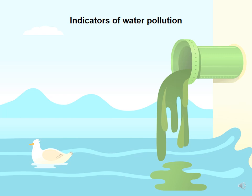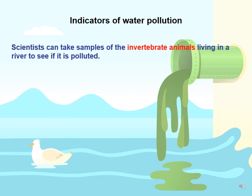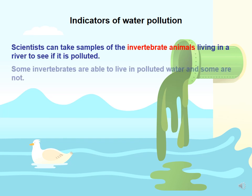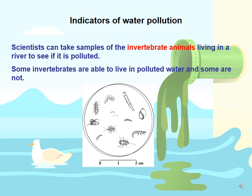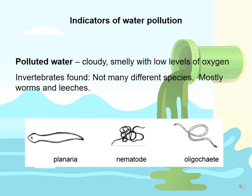Let's talk about indicators of water pollution. Scientists can take samples of the invertebrate animals living in a river to see if it's polluted. Invertebrates are animals without a backbone. Some invertebrates are able to live in polluted water and some are not. So if we were to take a sample and examine what was in our water, we would be able to tell what type of pollution area this is. In polluted water, which is cloudy and smelly, with low levels of oxygen due to decomposition and bacteria using up all the oxygen, the invertebrates found are not very varied.